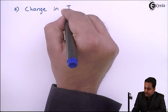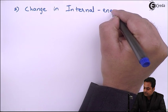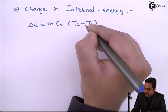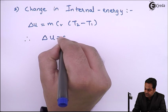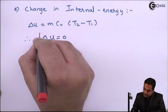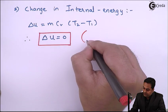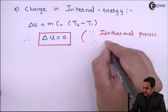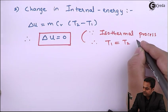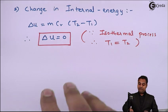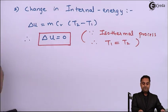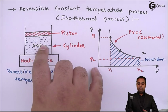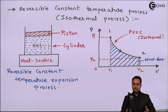The change in internal energy for the isothermal process is given by ΔU = mCv(T2 − T1). Therefore ΔU = 0, because since it is an isothermal process T1 = T2, so there is no change in temperature and hence no change in internal energy. This means all the heat supplied to the system is completely converted into work, with no increase in internal energy.